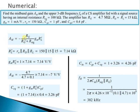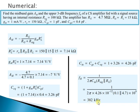To compute midband gain: RL_dash = R0 ∥ RD ∥ RL = 7.14 kΩ. GM×RL_dash = 7.14 V/V, giving AM = −7. CEQ = (1 + GM×RL_dash)×CGD = 3.26 pF. Total input capacitance CIN = CGS + CEQ = 4.26 pF. Finally, FH = 1/(2π×CIN×(RG ∥ R_signal)) = 382 kHz.